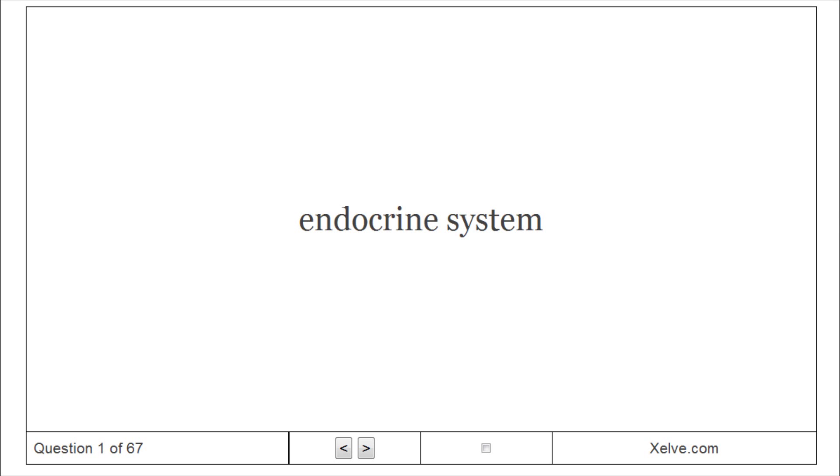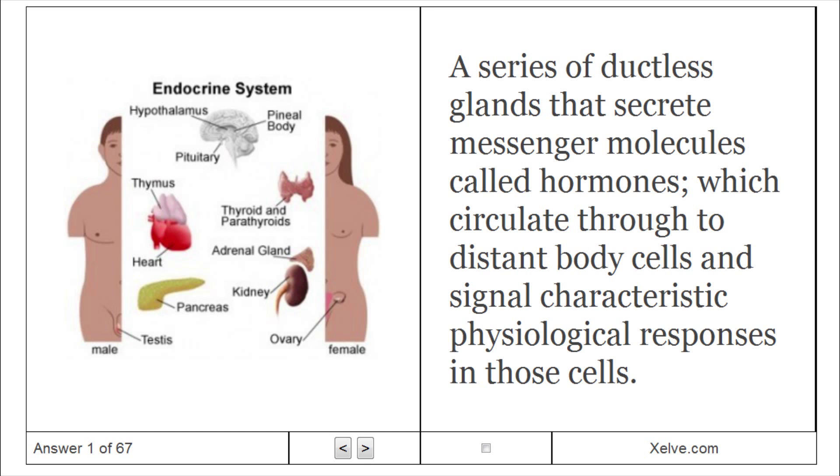Endocrine system. A series of ductless glands that secrete messenger molecules called hormones, which circulate through to distant body cells and signal characteristic physiological responses in those cells.